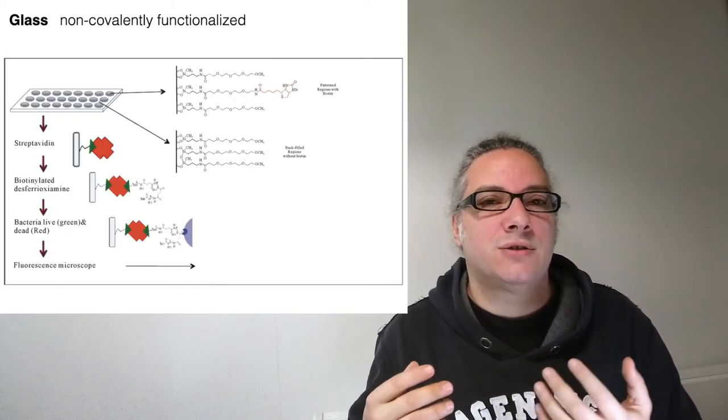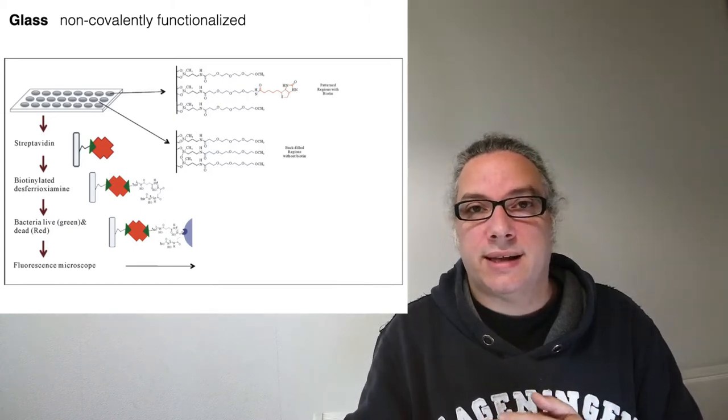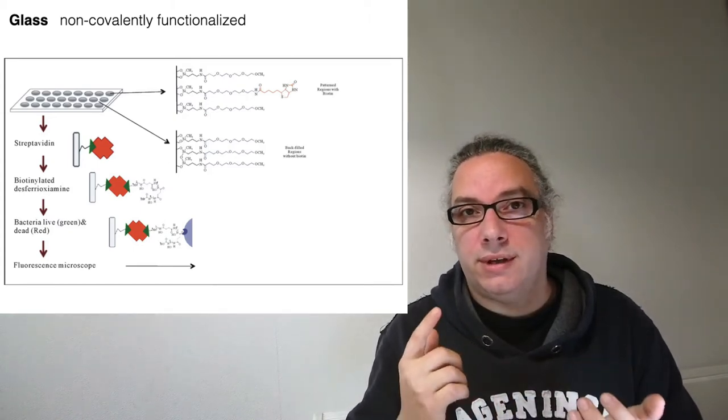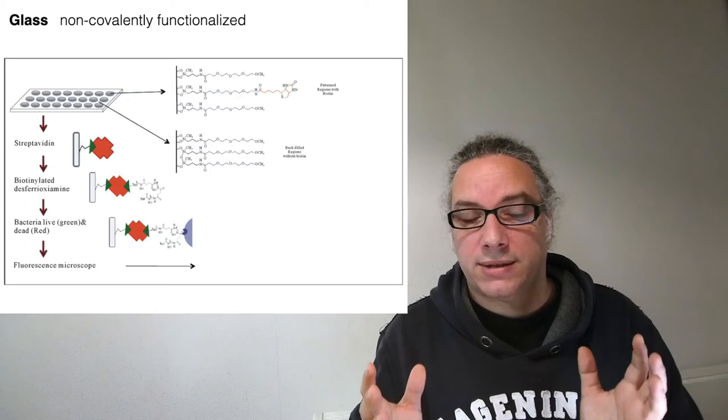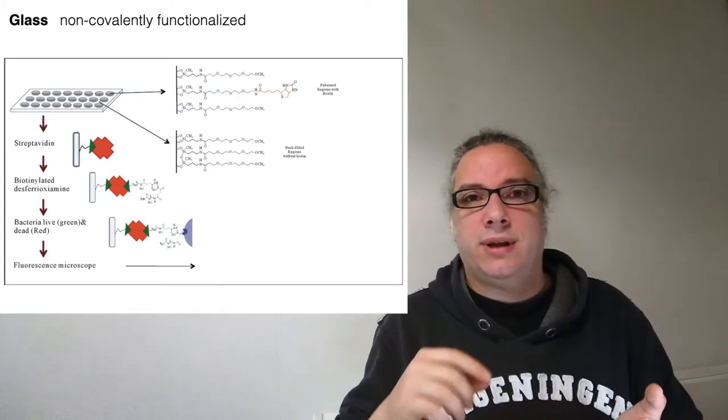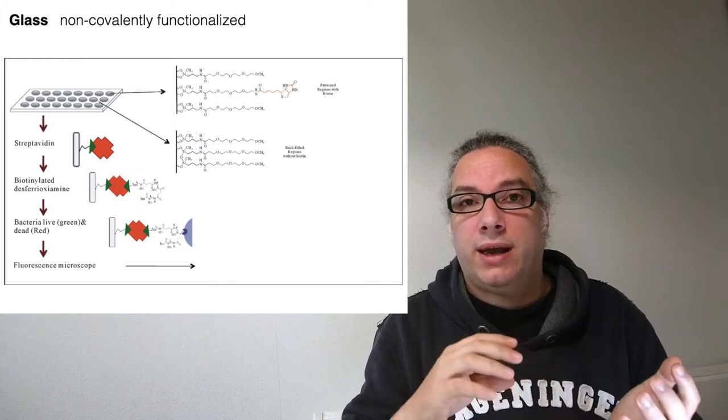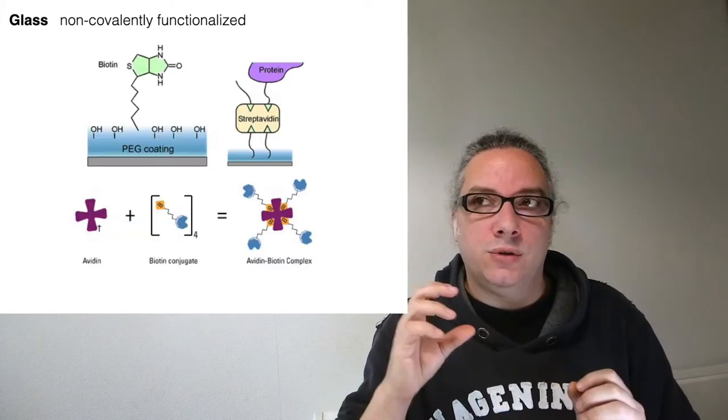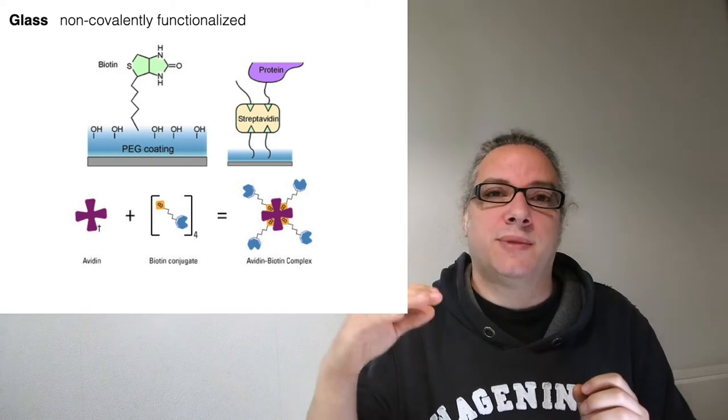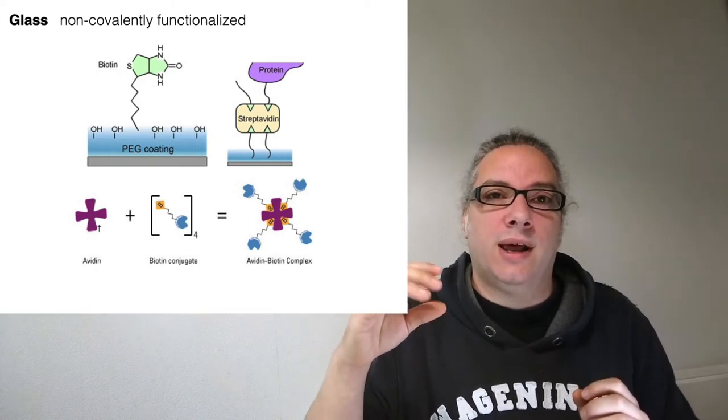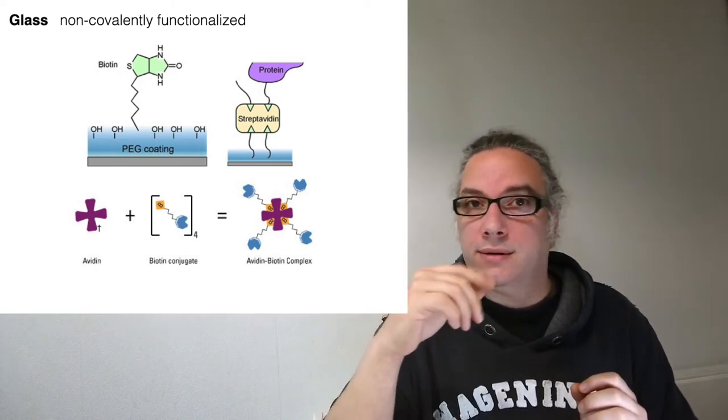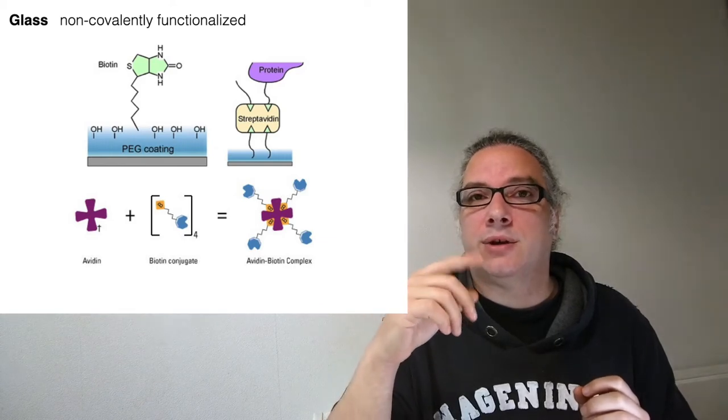You can also use non-covalent interactions on surface, and this is standardly done with the avidin-biotin complex. Streptavidin is a protein that contains four different sites for the recognition of biotin, and their binding is super high. Usually you put the biotin on the surface, then you put streptavidin, and the streptavidin will have also another empty spot for binding biotin on top.